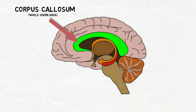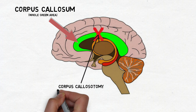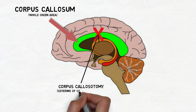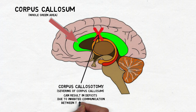The importance of the corpus callosum can be seen in patients who have had their corpus callosum surgically severed, usually to stop the spread of epileptic seizures. After the procedure, known as a corpus callosotomy, patients may display deficits representative of decreased communication between the cerebral hemispheres, such as the inability to name an object if it is shown only in the left visual field.